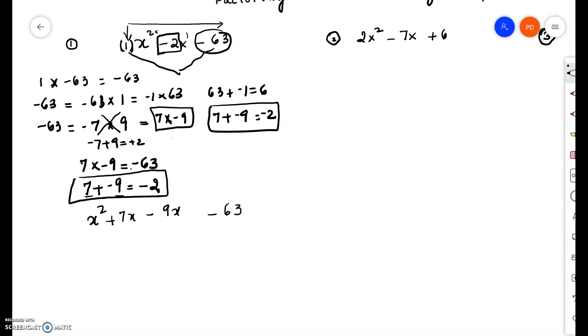So if 7 minus 9 is negative 2, then obviously 7x minus 9x is equal to negative 2x. So we have the middle term, which is negative 2, is written as plus 7x minus 9x.